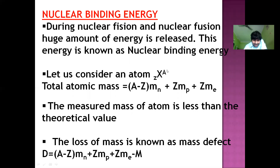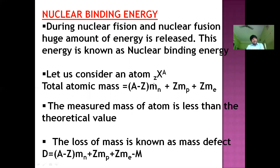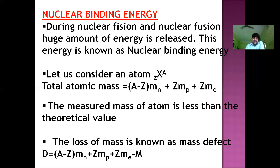Z is the atomic number, meaning the number of protons. Since the number of protons always equals the number of electrons, the number of electrons is also equal to Z. The number of neutrons is found by subtracting the atomic number from the mass number: neutrons = A minus Z.